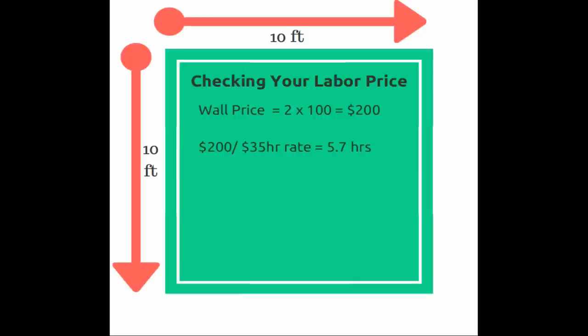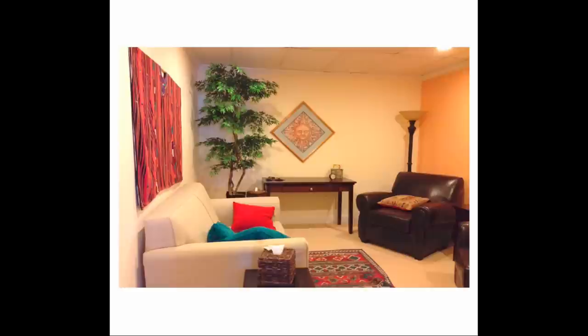So if we were to check the price and see what it's looking like, we can take the wall price of $200 and divide that by the amount we're looking to make per hour — $35 an hour — which gives us just under six hours to do the job. Looking back at the pictures of the room, can I paint the walls in six hours? Absolutely — no question.